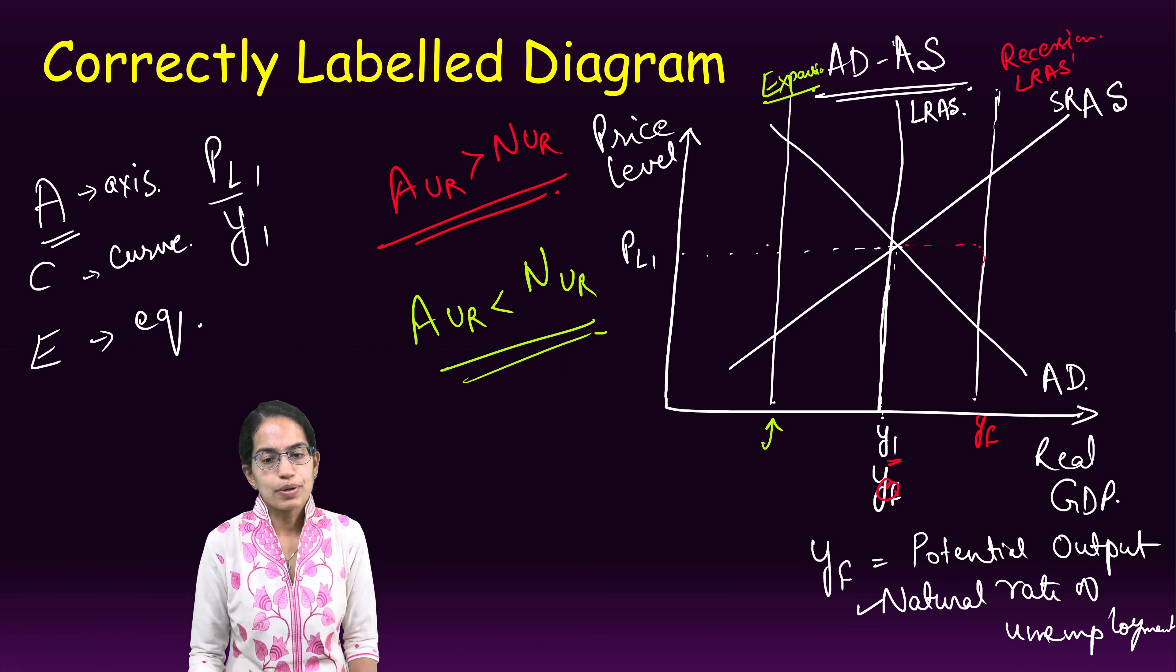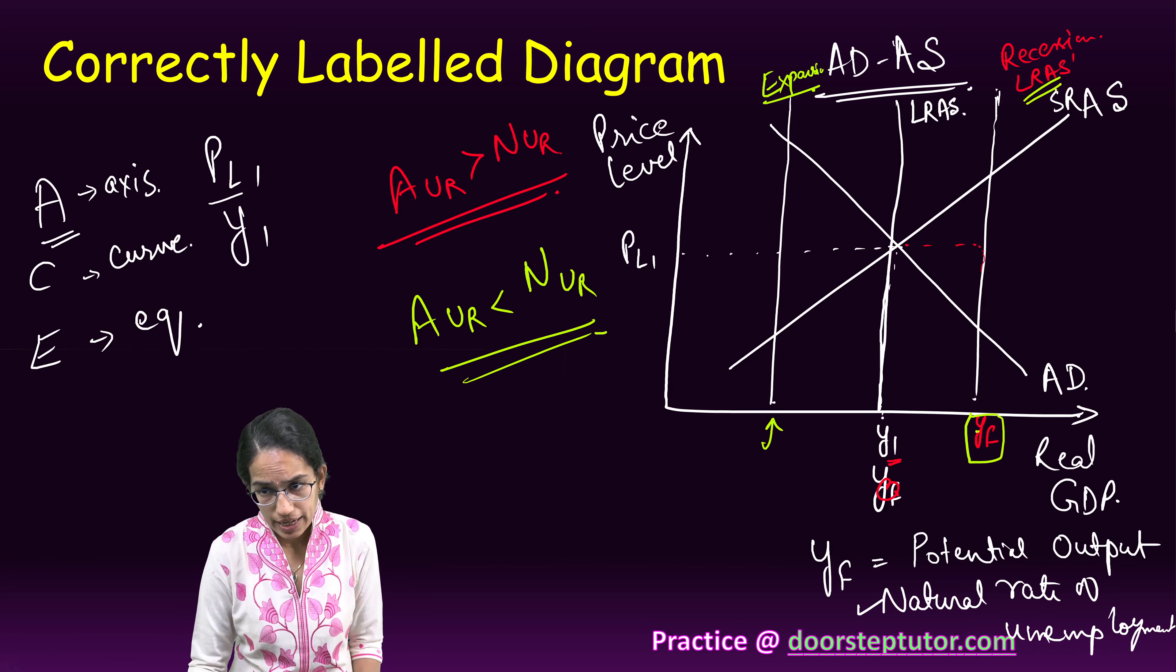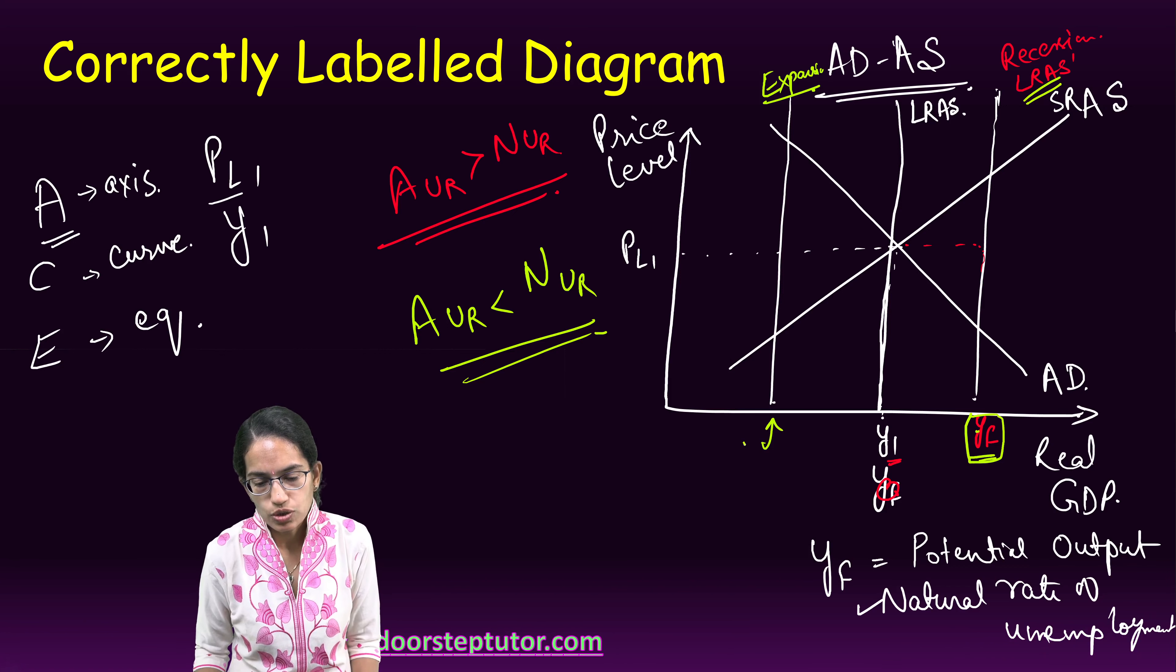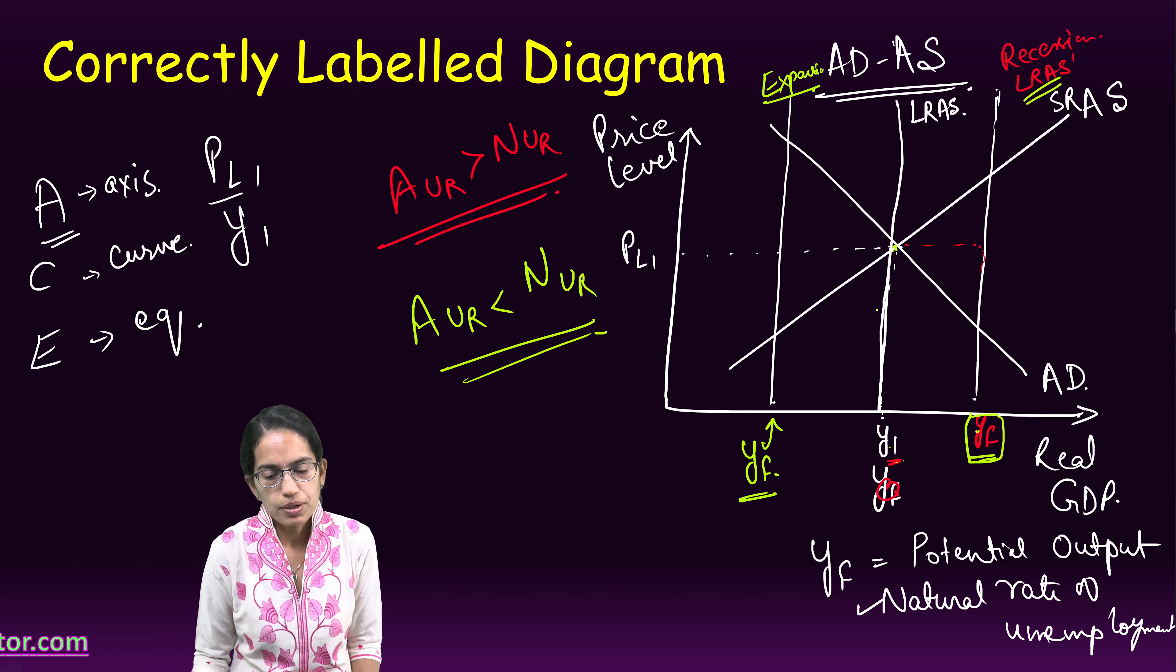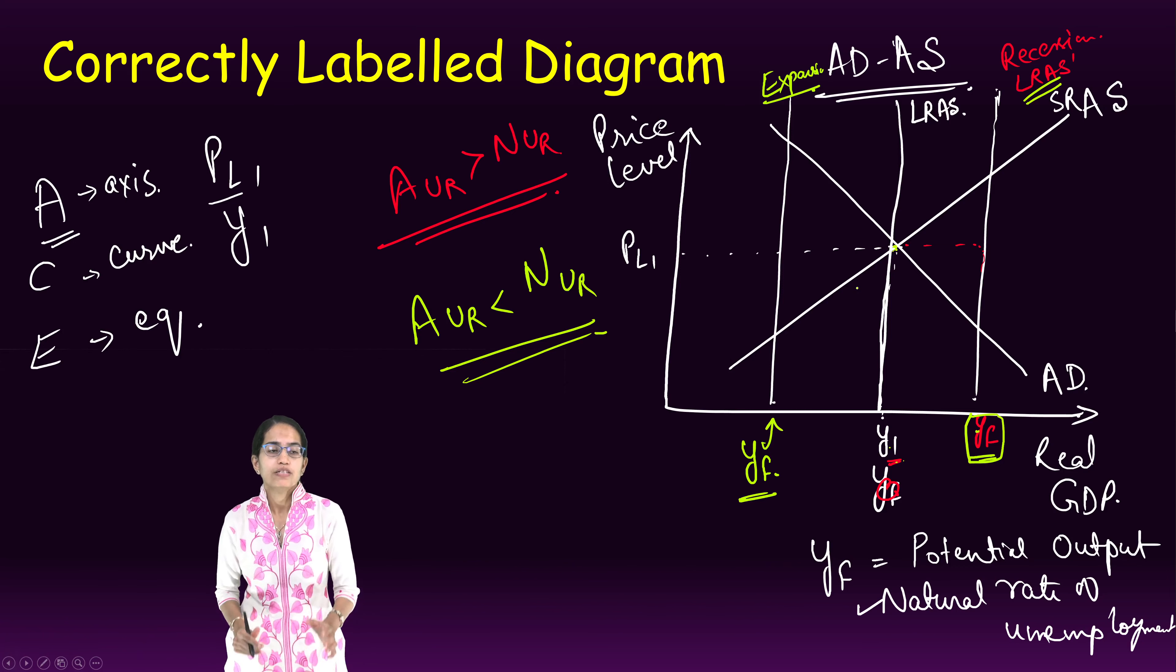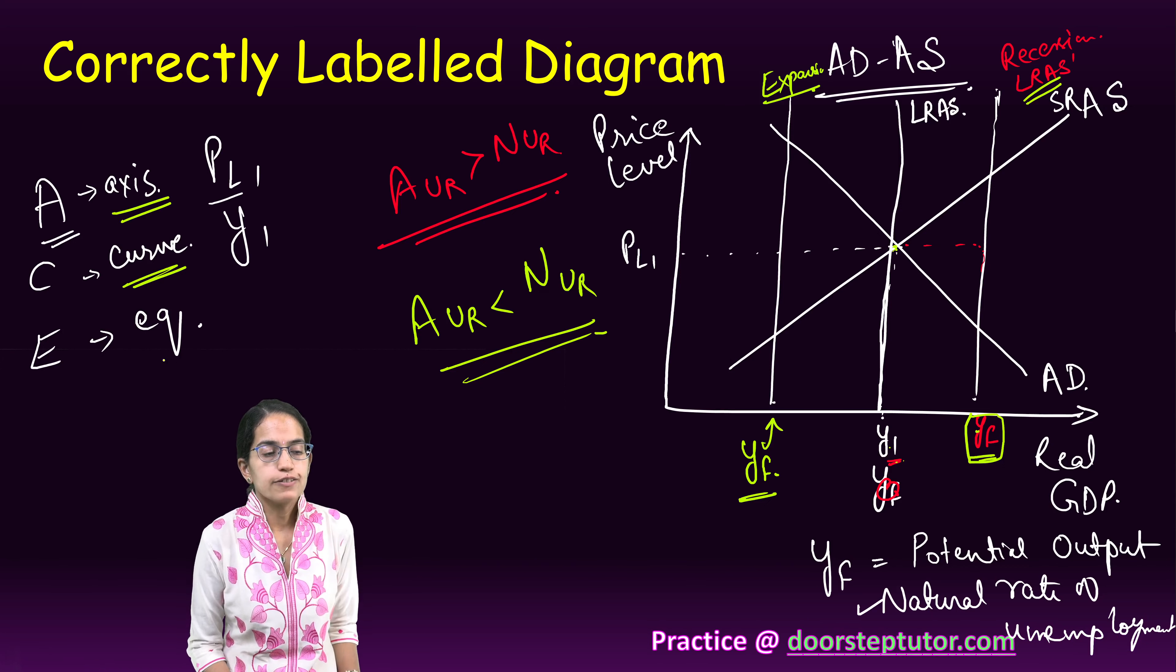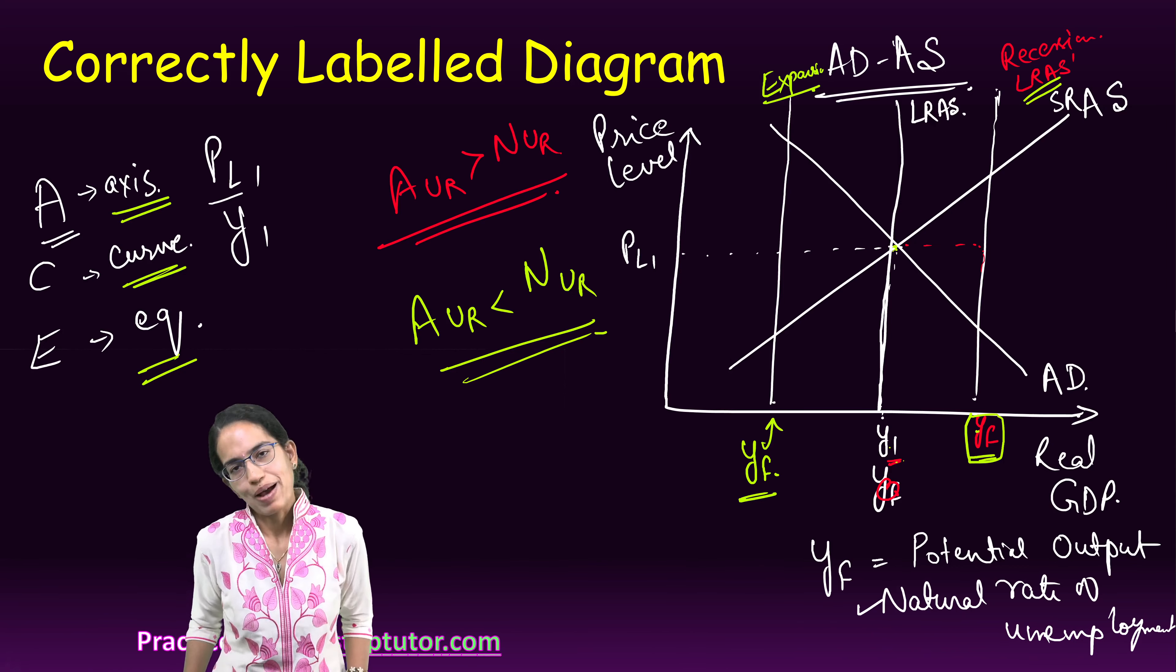Based on what is asked in the question, the correct labeling becomes important. Even if you are asked to mark the full employment levels, if you have an LRAS on the right, you would have the full employment here; if it is on the left, you would mark the full employment here. You would mark your current output level at the equilibrium point, which is here, and this would be the shift that has to be explained. A correctly labeled diagram following the ACE method becomes important: marking the axis, marking the curves, and mentioning the equilibrium point while you are drawing your graphs in micro and macro.